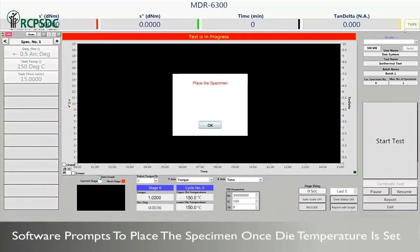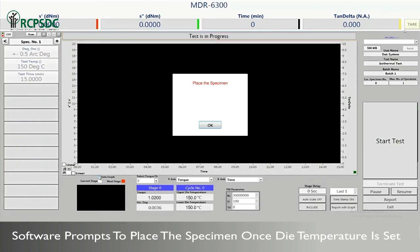Once correct pressure and die temperature is achieved, software will prompt you to place the test specimen for testing.